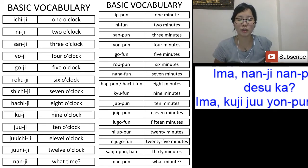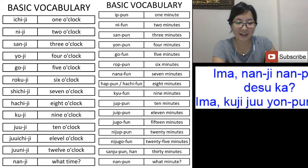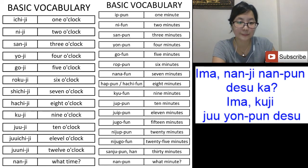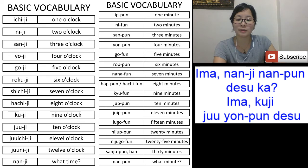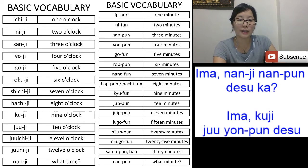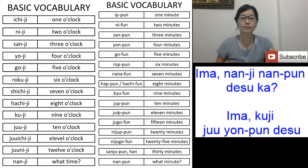'Ima ku-ji juu-yon-pun desu' — it means now it's 9:14. Juu-yon-pun means 14 minutes.